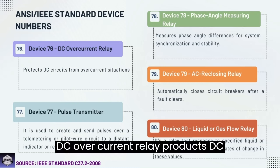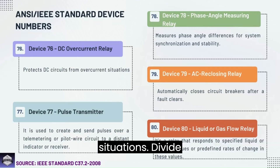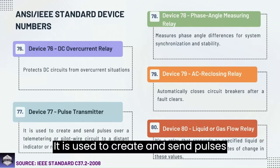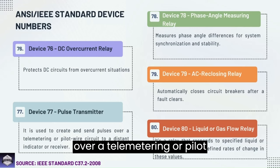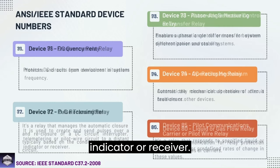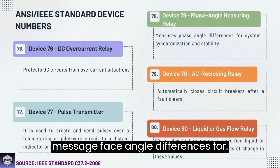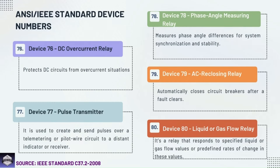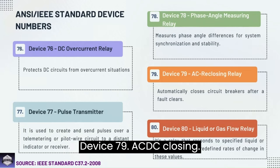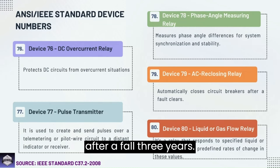Device 76: DC overcurrent relay — protects DC circuits from overcurrent situations. Device 77: Pulse transmitter — used to create and send pulses over a telemetering or pilot wire circuit to a distance indicator or receiver. Device 78: Phase angle measuring relay — measures phase angle differences for system synchronization and stability. Device 79: AC reclosing relay — automatically closes circuit breakers after a fault clears.